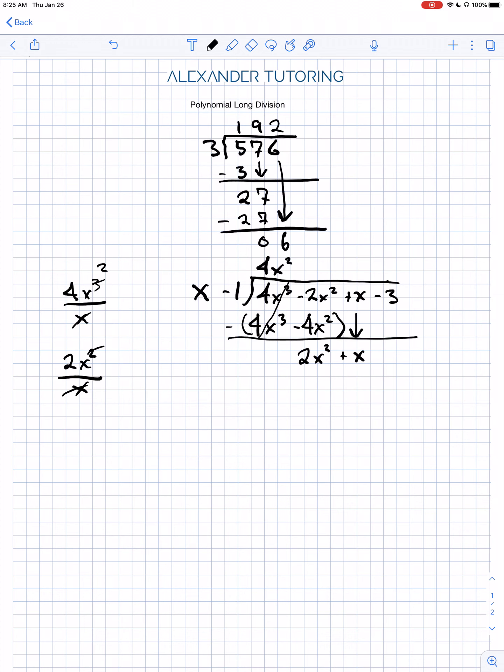Okay, so x goes into 2x squared positive 2x times. Okay, now we're ready to multiply again. So we're going to multiply this times all of this, not remembering to do distribute.